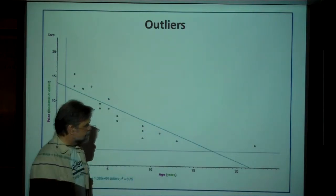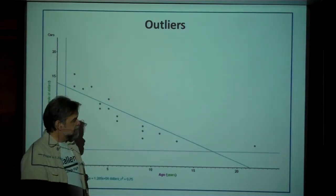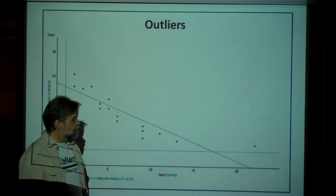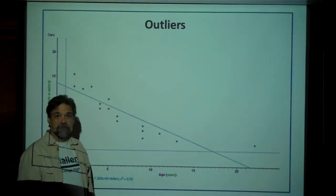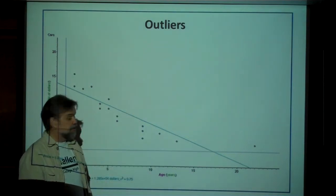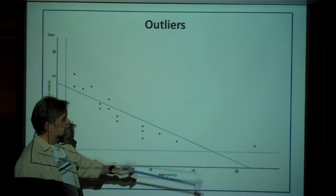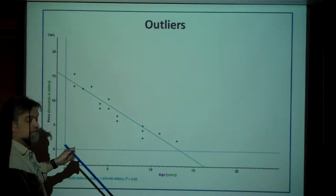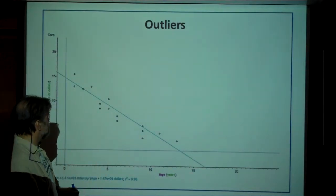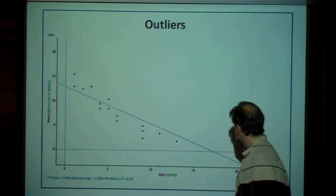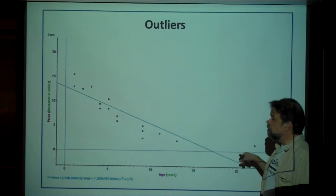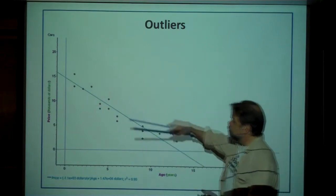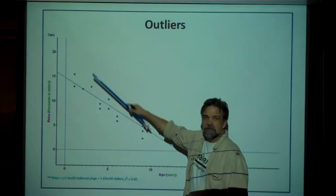That third point over there: I went and looked, and it turns out it's a Toyota that's over 20 years old but hasn't been driven much, so it's very cheap. I might decide I don't expect to see cars that old, so I'll throw it out. But notice — when I remove that one, the slope on my line really changed quite a bit. This is known as an influential point, because it had a lot of influence on the line once removed.